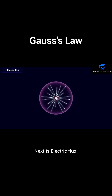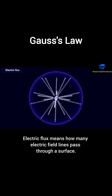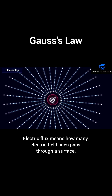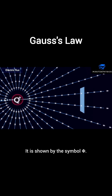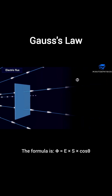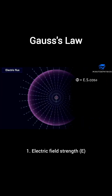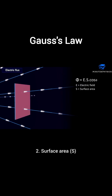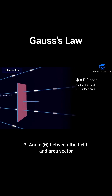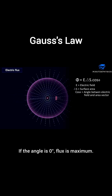Next is electric flux. Electric flux means how many electric field lines pass through a surface. It is shown by the symbol phi. The formula is phi equals E times S times cos theta. Flux depends on three things: one, electric field strength E; two, surface area S; three, angle theta between the field and area vector.